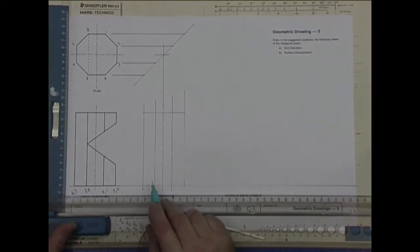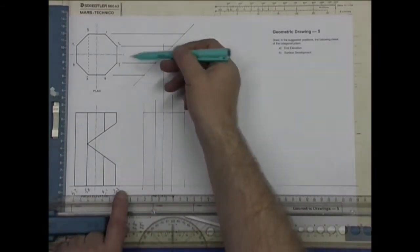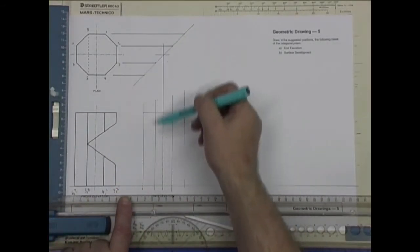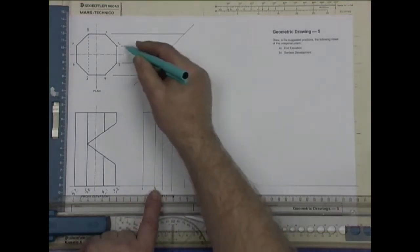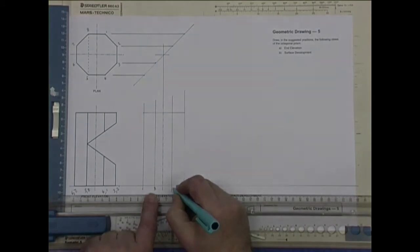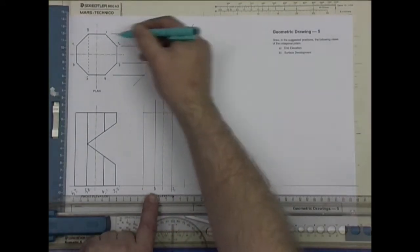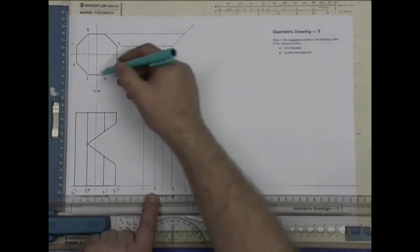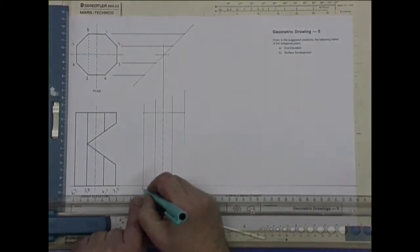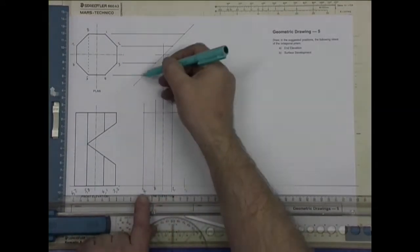I'm going to label it just to help me with the cuts. I'm looking here. Point 3 is nearest me. Point 2 is there. 1 is there. 4 is there. Now that's the numbers at the front.